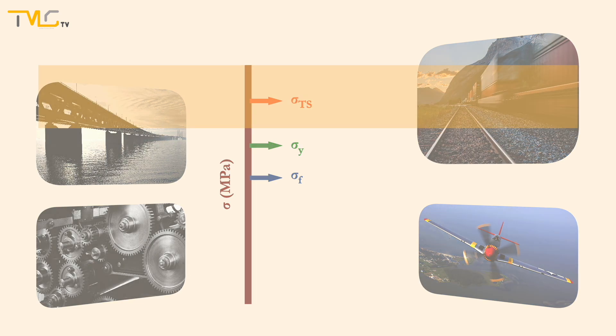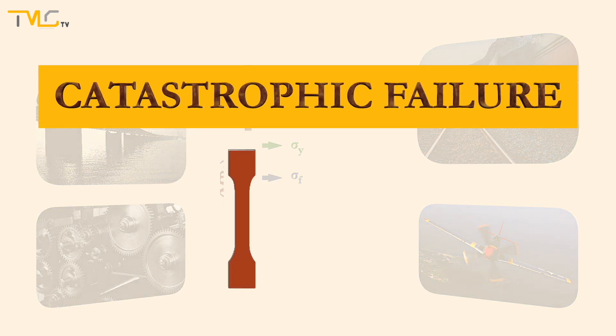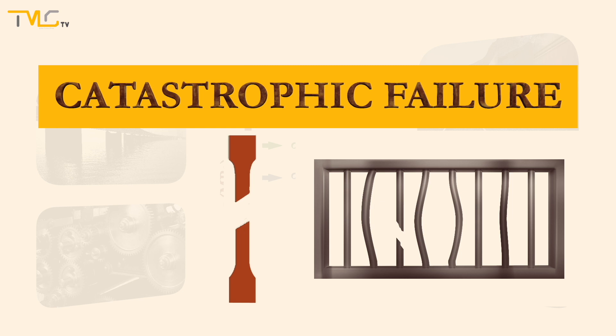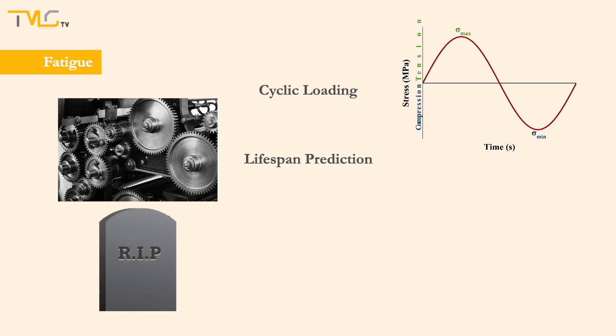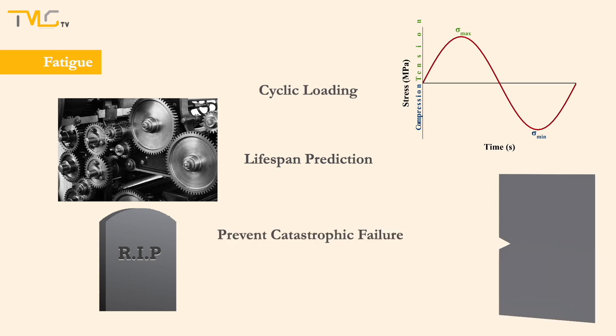Such failure is categorized as a catastrophic one and occurs without giving any signs or warnings like deformation or deflection visible to naked eye. At this point, the term fatigue kicks in to define and investigate the material failure under cyclic loading conditions, to predict the lifespan of materials, components and structures under various service conditions, and to prevent their catastrophic failures.